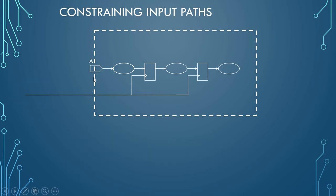Let us now see how we constrain the input ports. By constraining input ports, we tell the tool to optimize the design with respect to the specified delay. The tool is bound to honor the constraints we specify; however, if we over-constrain the design, the tool is intelligent enough to leave the optimization since it understands that it is not possible to meet the specified constraints. There is some other block outside which would be optimized by another designer sharing the interface with us.